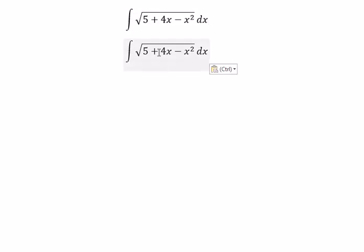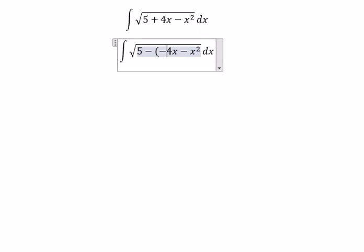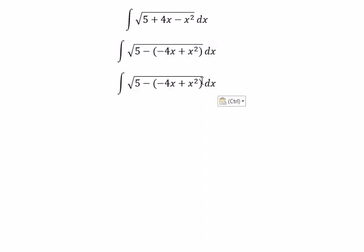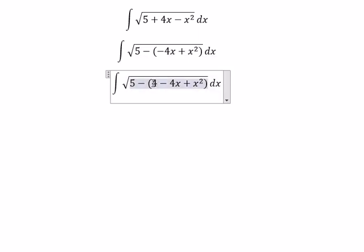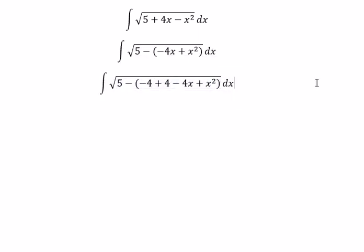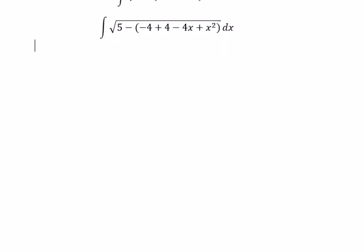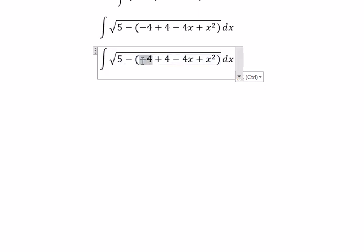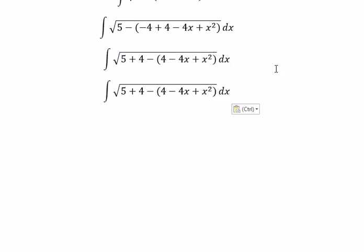We need to close the bracket in here and we put the negative. So inside we have negative 4x and we have positive x squared in here. Next, we need to add number 4, so it means we need to minus number 4. Negative number 4 we put outside because we still have a negative, so you got positive number 4. 5 plus 4 you got 9.